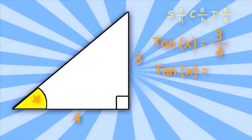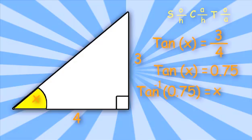3 over 4 is 0.75. Now we must use the tangent inverse of 0.75 to find the value of x. Using our calculator, x equals 36.87 degrees.